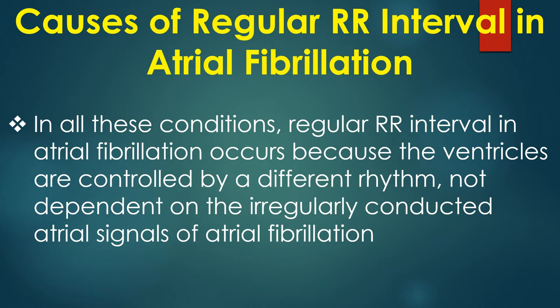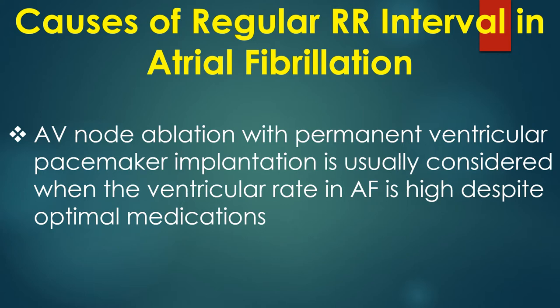In all these conditions, regular RR interval in atrial fibrillation occurs because the ventricles are controlled by a different rhythm not dependent on the irregularly conducted atrial signals of atrial fibrillation. AV node ablation with permanent ventricular pacemaker implantation is usually considered when the ventricular rate in AF is high despite optimal medications.